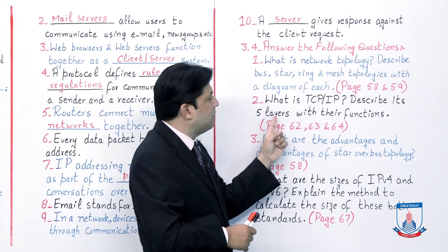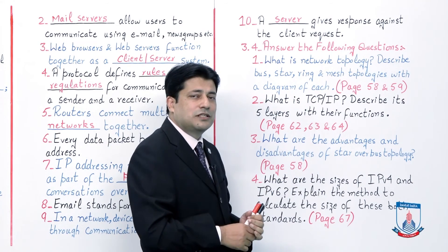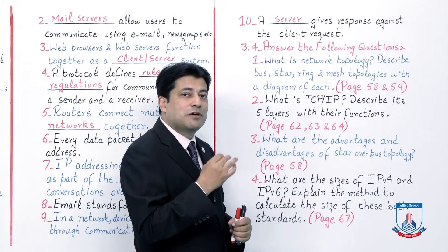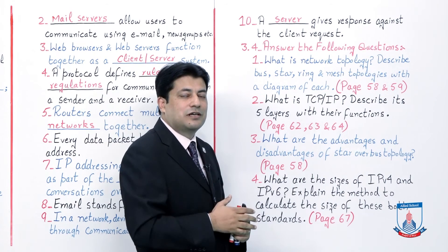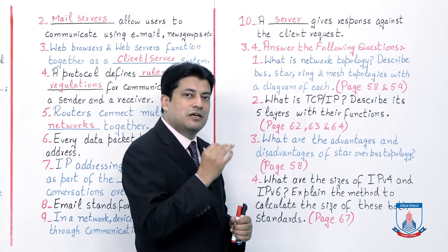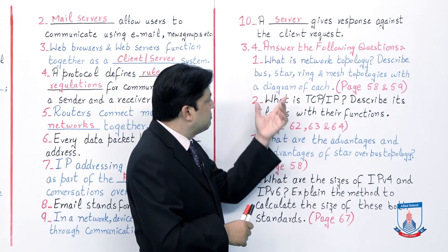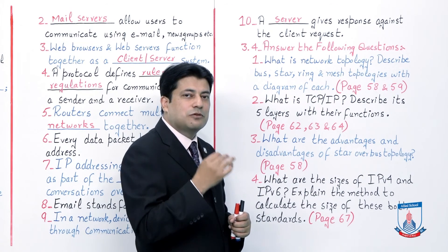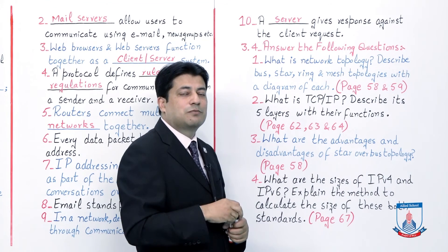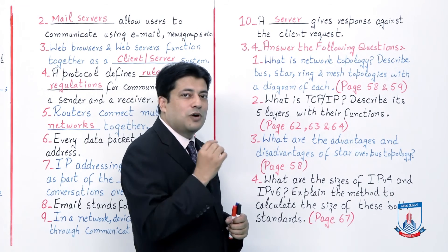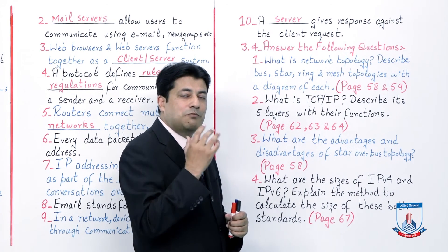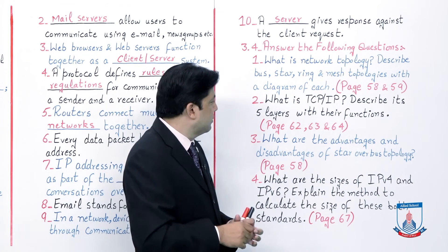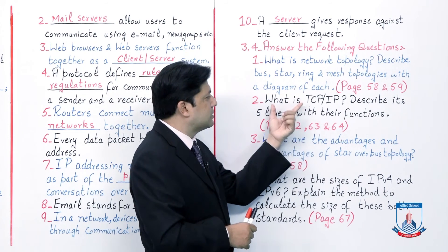Question 2: What is TCP/IP? Describe its 5 layers with their functions. We discussed the TCP/IP model — Transmission Control Protocol/Internet Protocol — which has 5 layers. We covered each layer and its basic functionality one by one. Listen to the specific lecture for answers, and write them yourself. Pages 62, 63, and 64 have the detail.